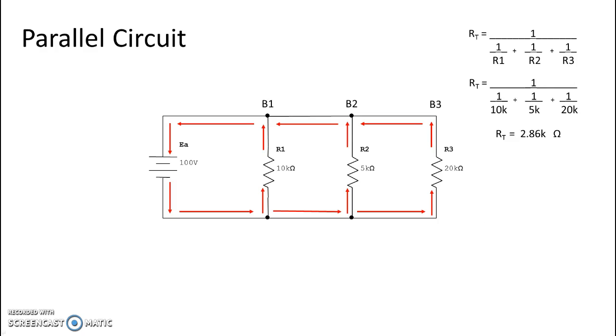Now you can see that that is less than our smallest branch, which is branch two. It has R2 in it, which is 5k ohms. So the rule is true, and we find that we do indeed have less total resistance than any one of our individual branches. That's a good double check for you if you ever find yourself wondering, did I do the formula right?